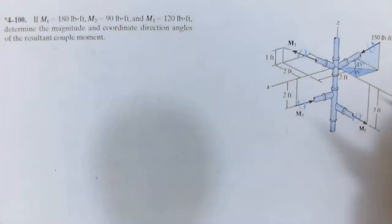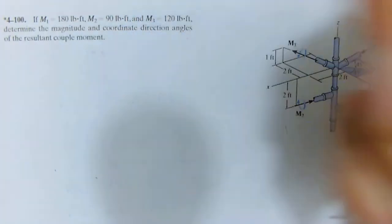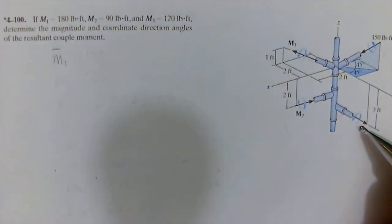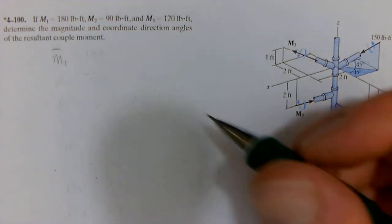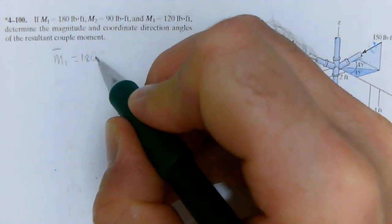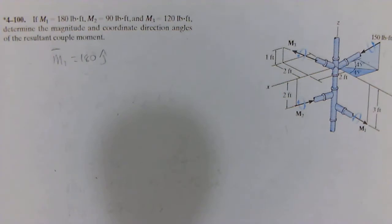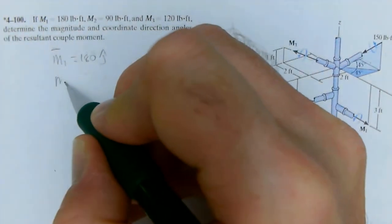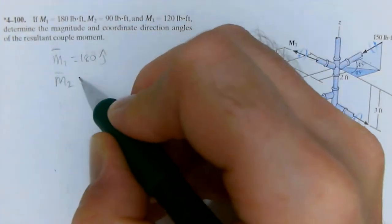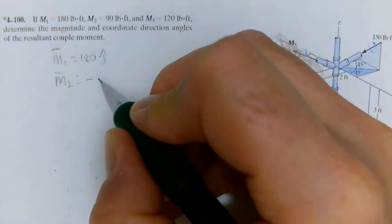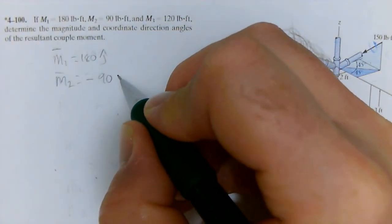We'll start by writing out the moments in Cartesian coordinates. So moment 1 is all in the y, and that's going to give us 180 in the j direction. Moment 2 is all in the i direction but it's pointing in, so it's negative. So negative 90 in the i direction.